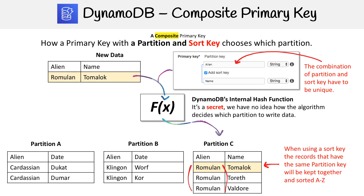Here we have an alien that is a Romulan, and it's grouping it together with other Romulans. It's also sorting that data from A to Z, so the data is close together and faster to access. That is the idea behind the composite primary key and how it figures out what partition to go to.